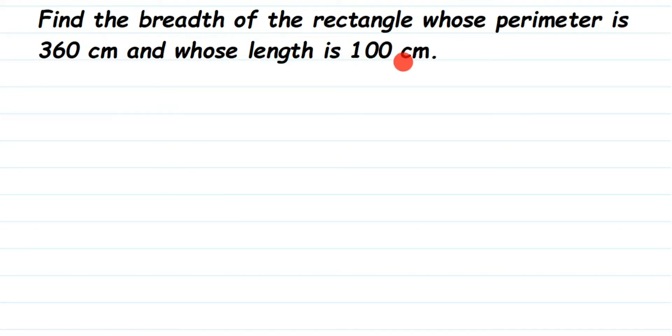They have given two things to us. One is the perimeter of rectangle which is 360 cm. They have also given the length which is 100 cm. What we have to find out? We have to find out the breadth. They have given length and perimeter, we have to find out the breadth.